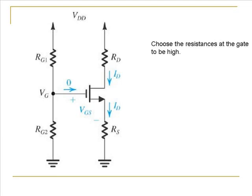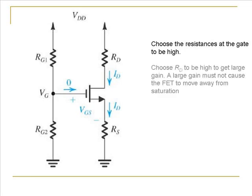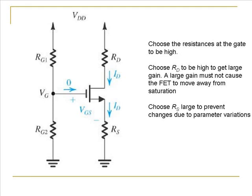In this circuit we would like to choose the resistances at the gate to be very high so as to give a high input impedance to the AC signal that we are going to couple to this biased MOSFET. We would like the drain resistance to be very high because we want a large gain. However the drain resistance should not be so high that the MOSFET actually goes out of the saturation region, goes into either the cutoff or the triode region. In this circuit we would want to choose the source resistance to be very large so as to prevent changes due to parameter variations.